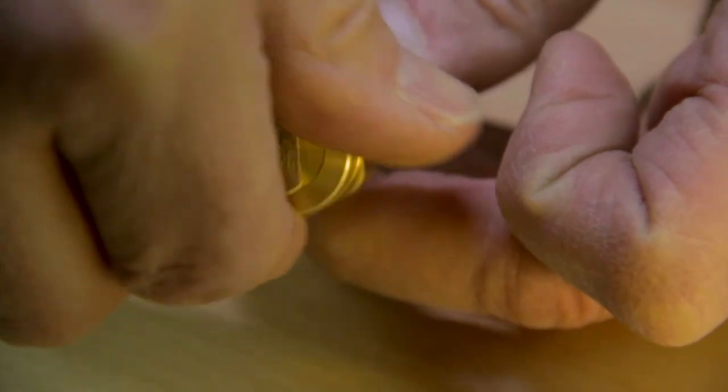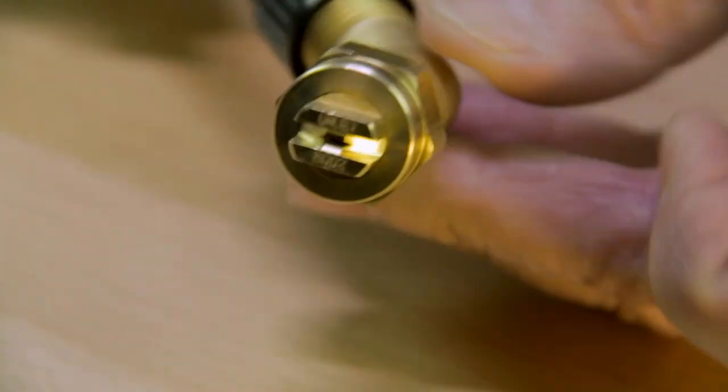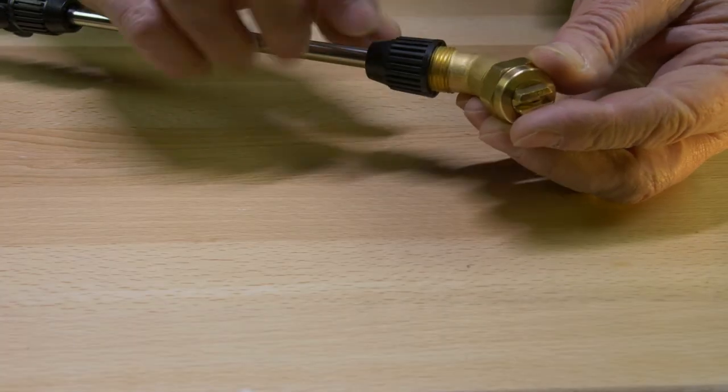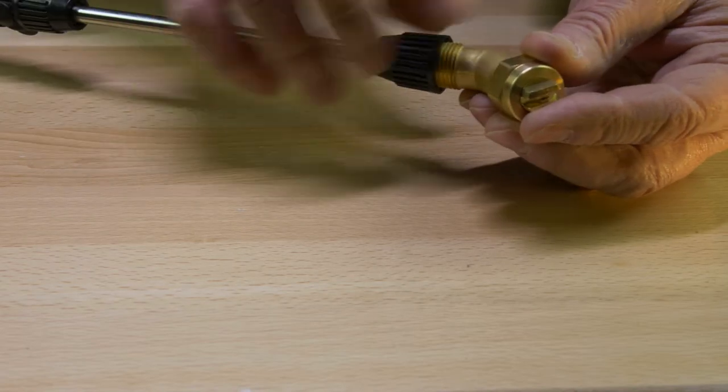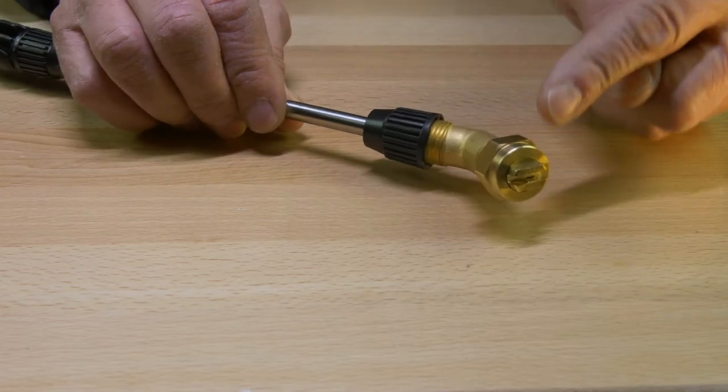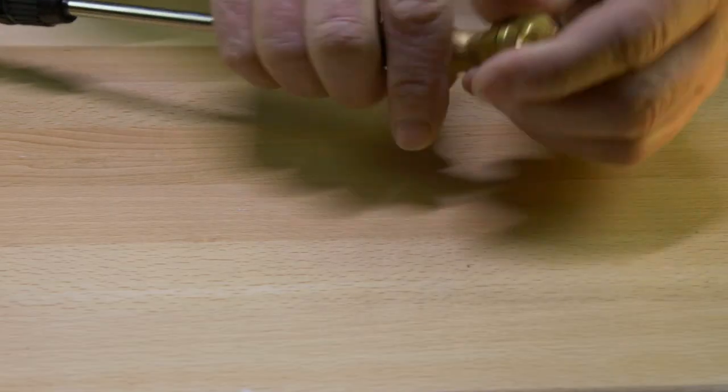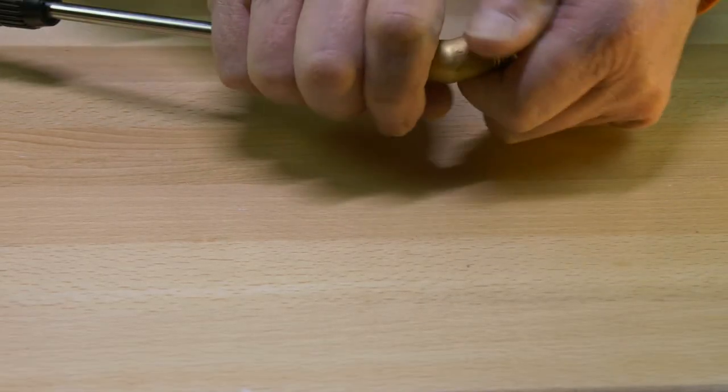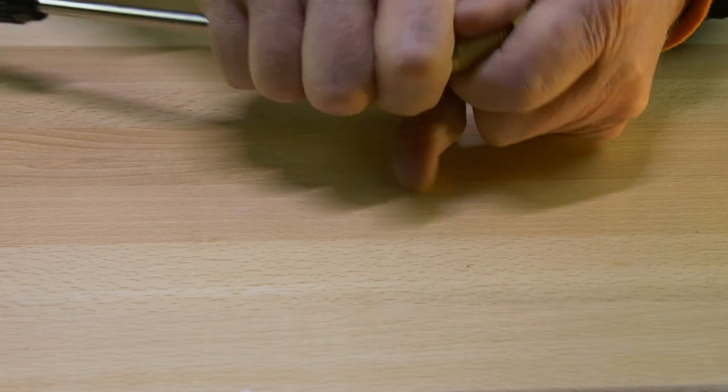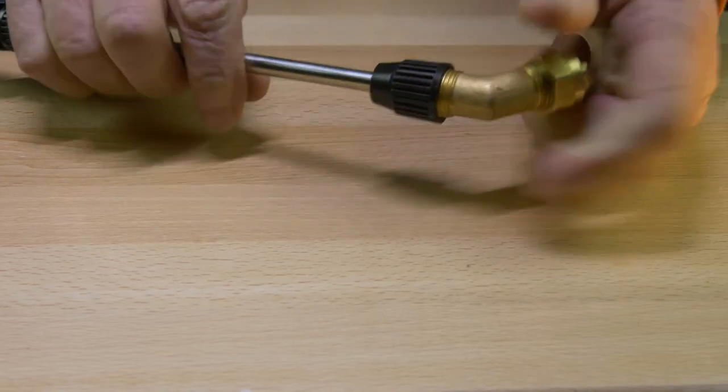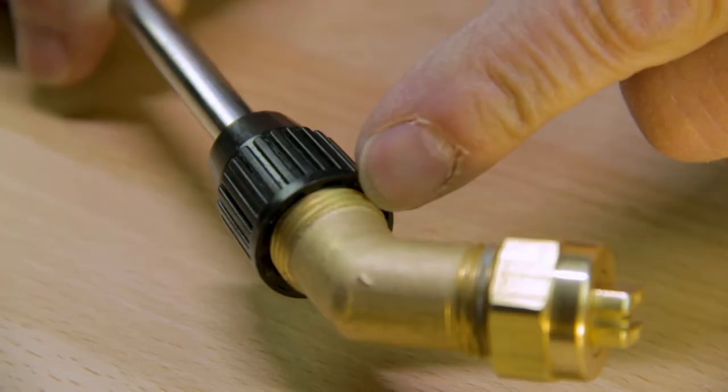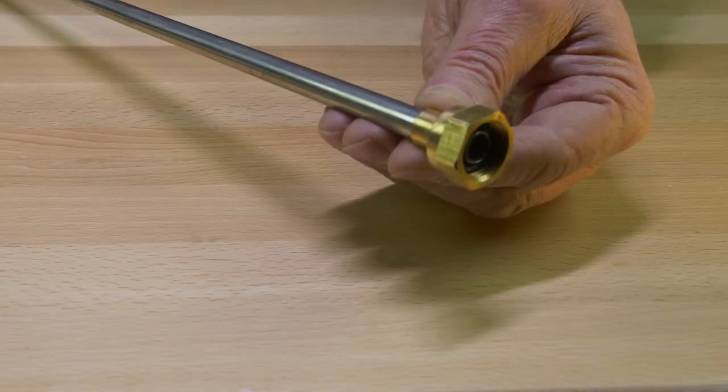It doesn't have to be so tight. This is to set the depth so this rod doesn't go too far into the nozzle. Once you've done this, finish off tightening this particular nut to the brass 45-degree nozzle. Make sure that part is very snug.